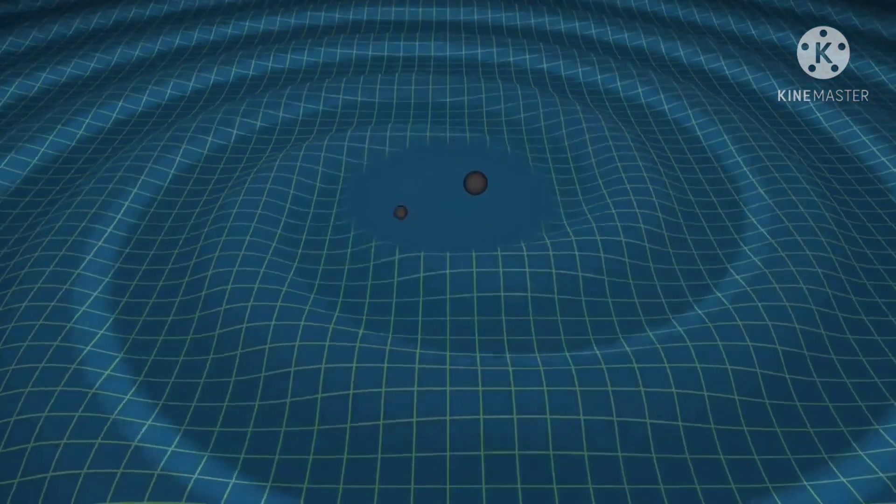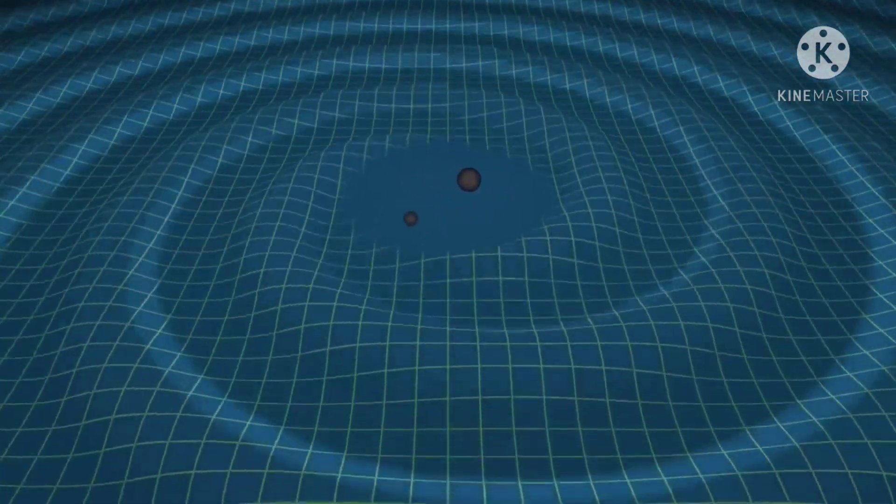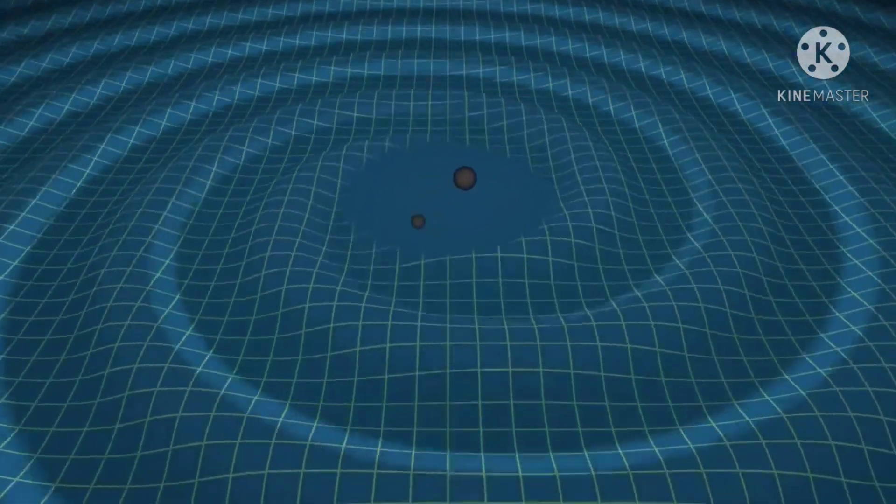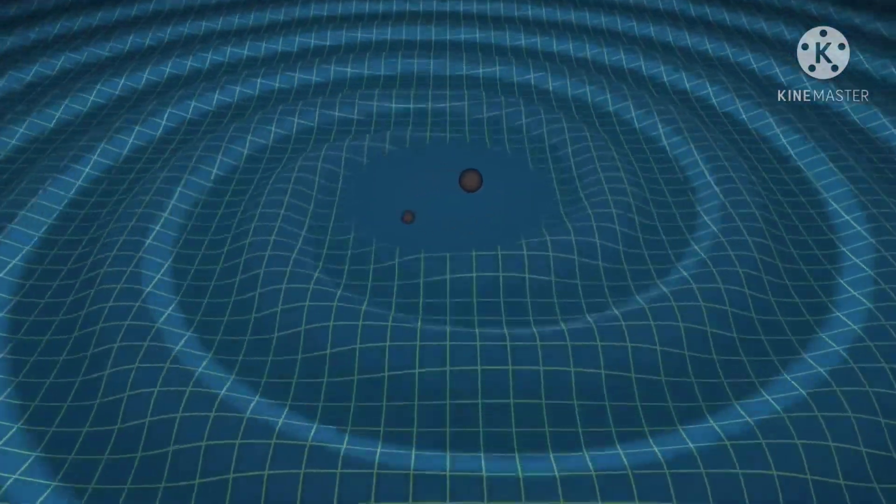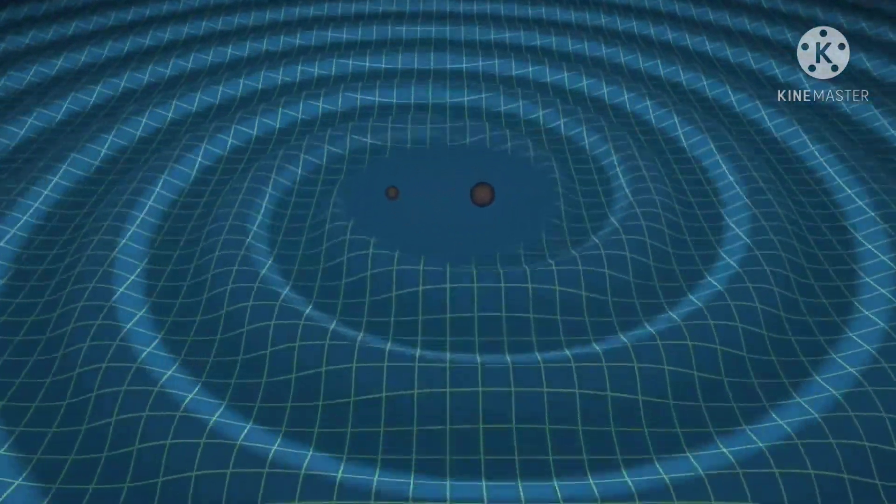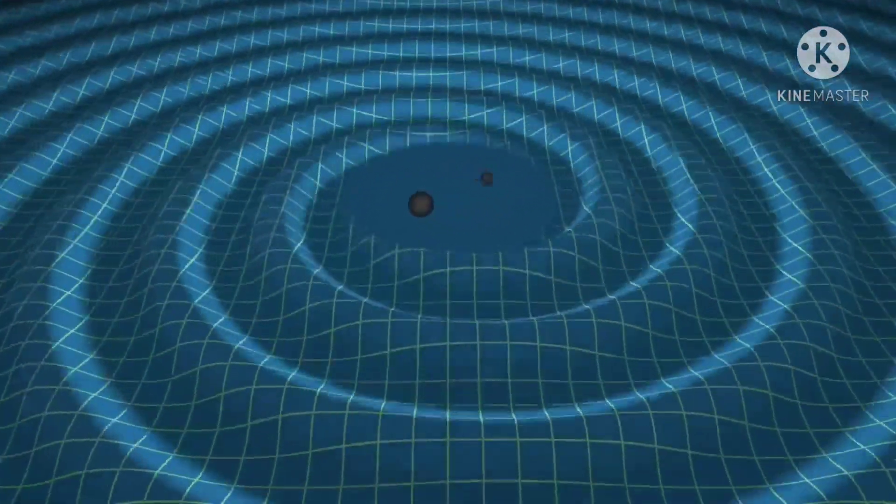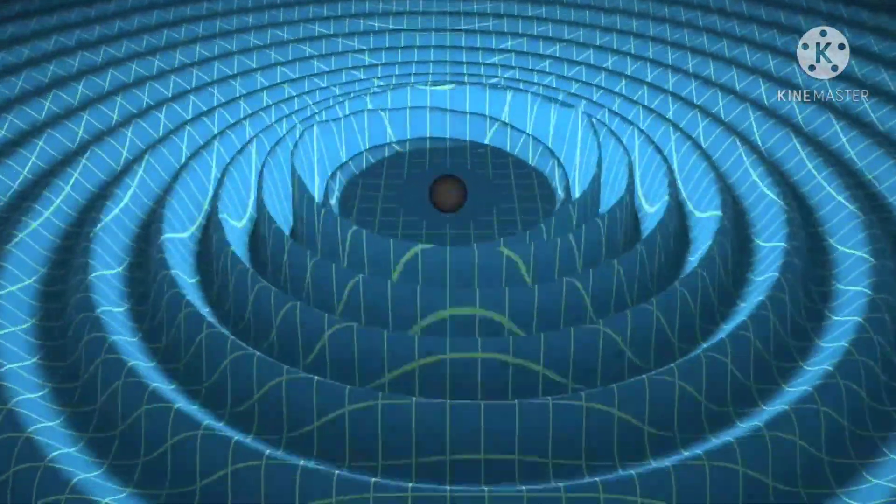Hey friends, my name is Himanshu and you are watching The World Around. Today we will talk about gravitational waves and LIGO. Gravitational waves are disturbances in the curvature of space-time generated by accelerated masses that propagate as a wave outward from their source at the speed of light.